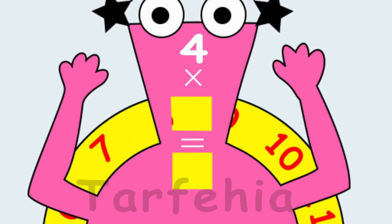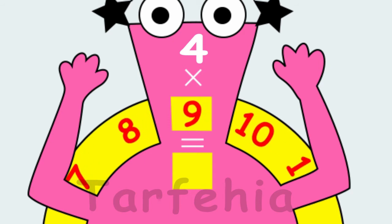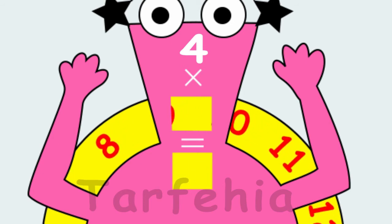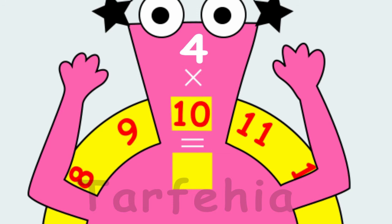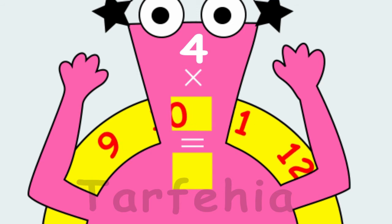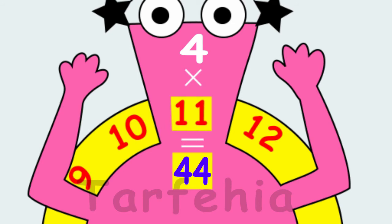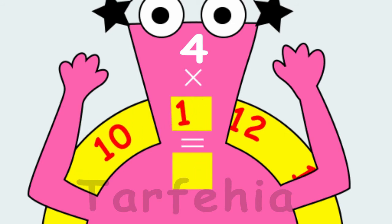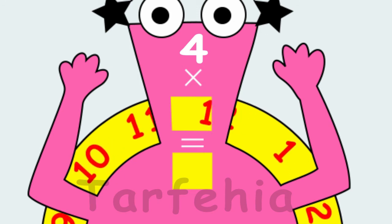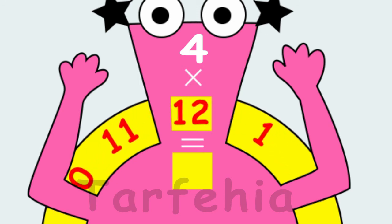Four times nine equals thirty-six. Four times ten equals forty. Four times eleven equals forty-four. Four times twelve equals forty-eight.